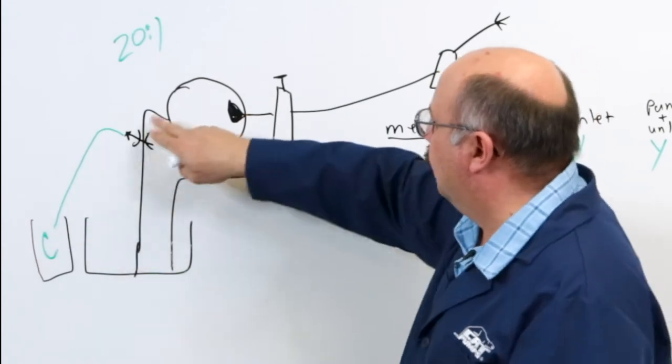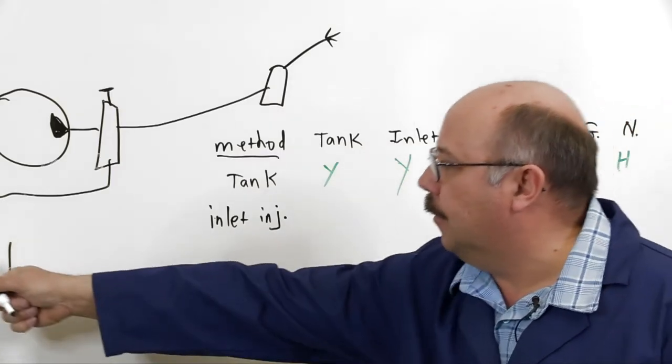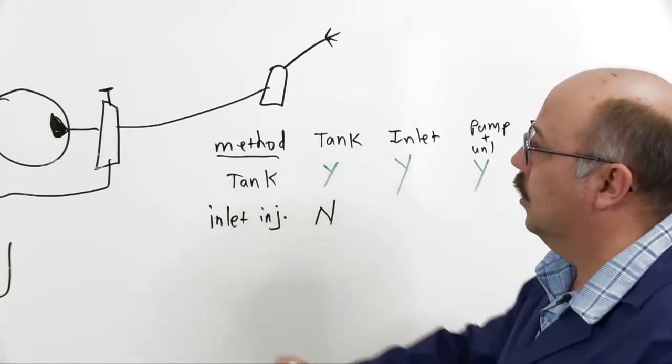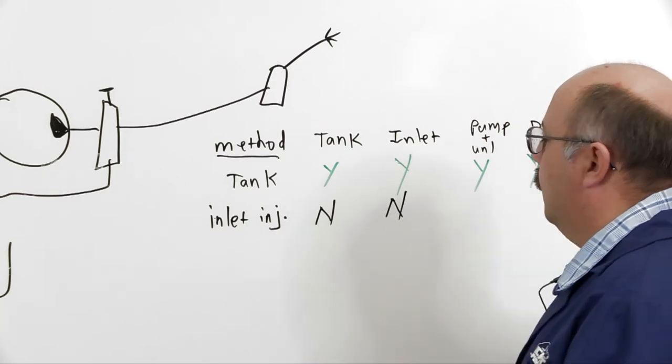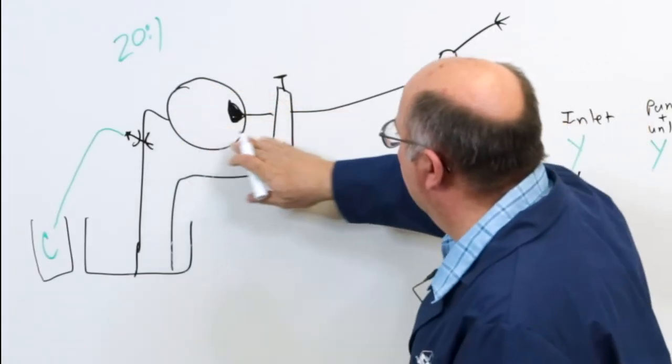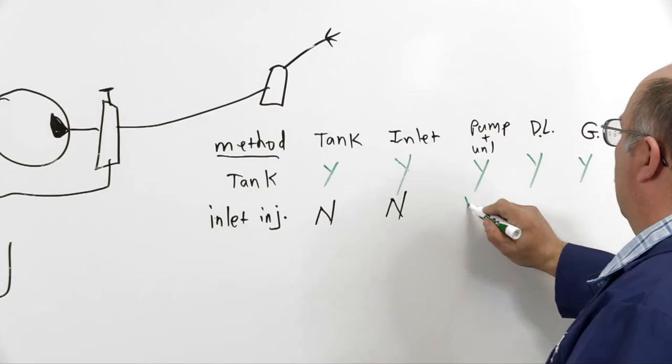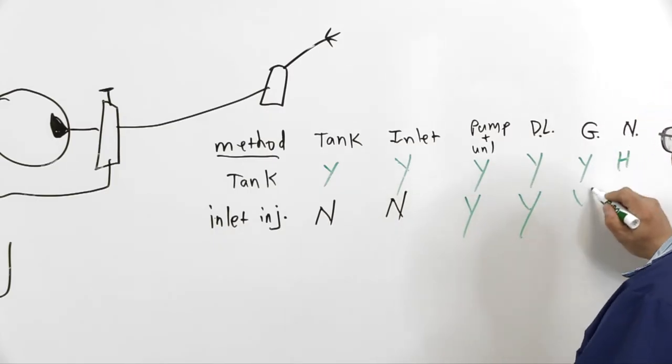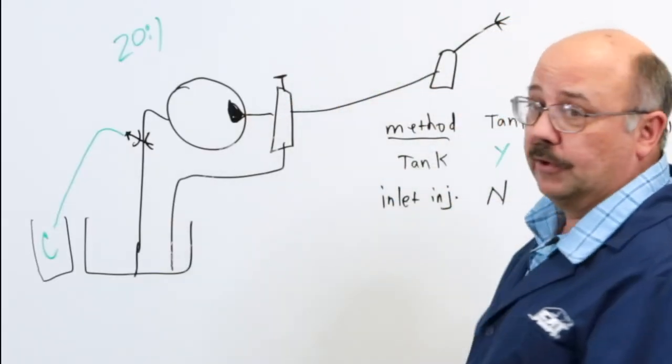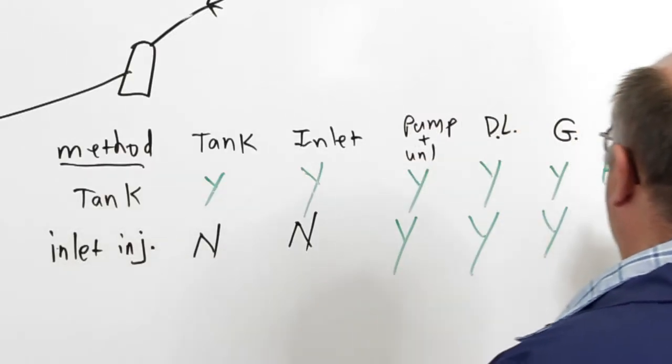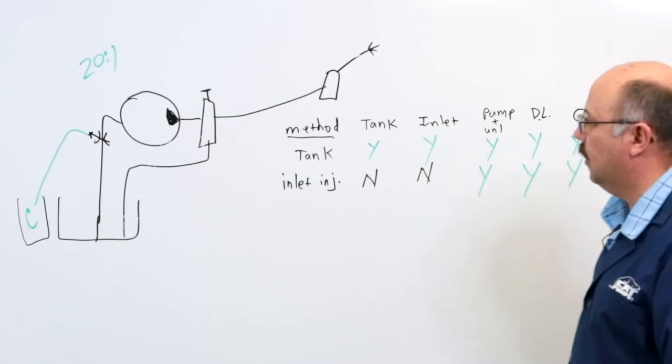So in this case, do we have chemical in our tank? No we do not. Do we have chemical in our inlet line? No we do not. Do we have chemical at our pump and unloader? Yes, because here's where it mixes in and now it's going to be in everything downstream. So we're going to have chemical everywhere else. Now this method also allows us to have high pressure chemical at the nozzle. So I'm going to put an H there. As you can see, we're filling up our chart here.